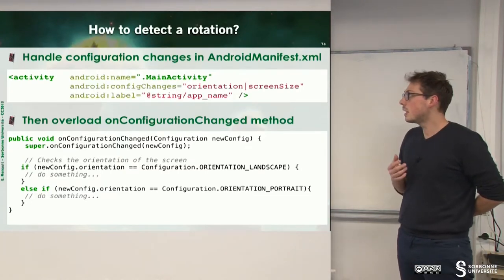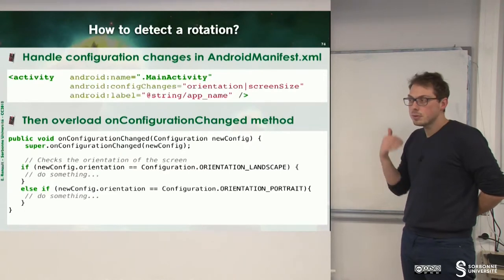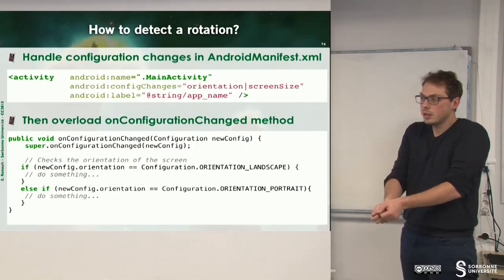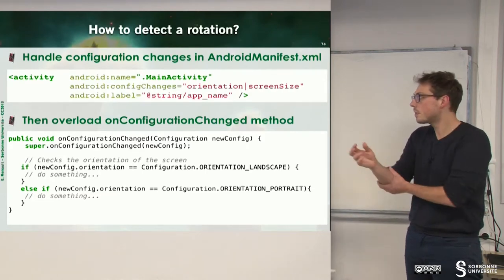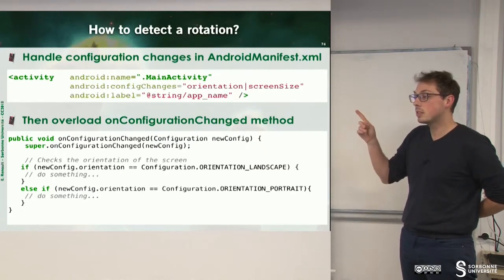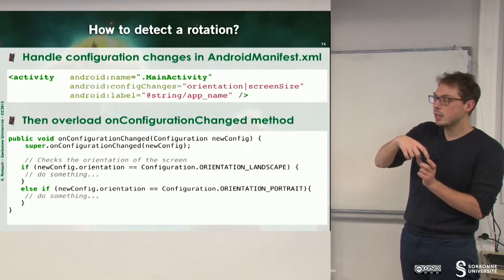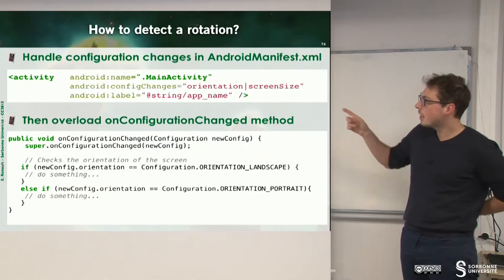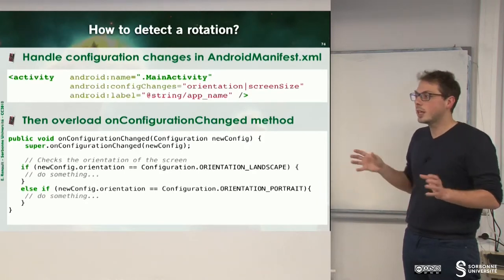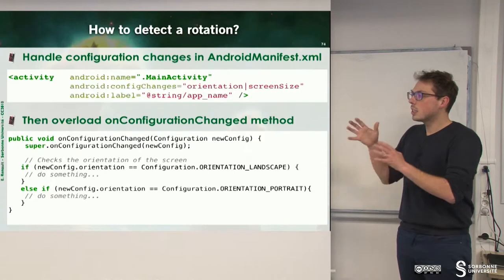One idea could be to detect a rotation. When detecting a rotation, we could write important values into a file, and then when our application is relaunched, we can load this file and find our data. We can do that by handling configuration inside of the AndroidManifest.xml — creating special permissions that notify us when we're rotating. Then we have to override the onConfigurationChanged method to handle portrait and landscape separately. However, we have to manage it by hand, which is quite a pain.